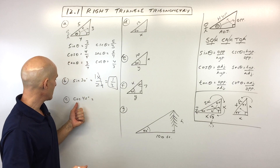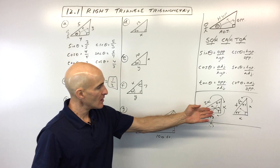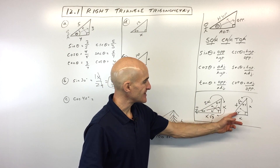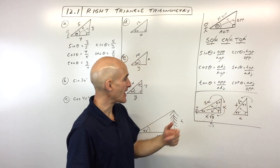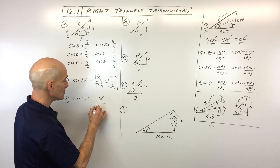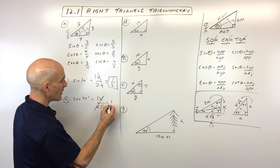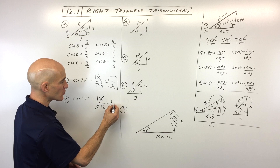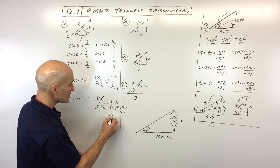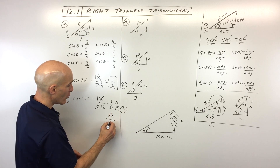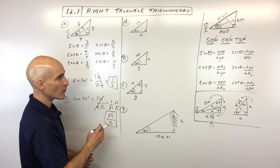For example C, cosine of 45 degrees. Cosine is adjacent over hypotenuse, so that's X divided by X square root of 2. The X's cancel, giving us 1 over square root of 2. We rationalize by multiplying top and bottom by square root of 2, which gives us square root of 2 over square root of 4, and square root of 4 is just 2. So the exact value for cosine of 45 degrees is square root of 2 over 2.